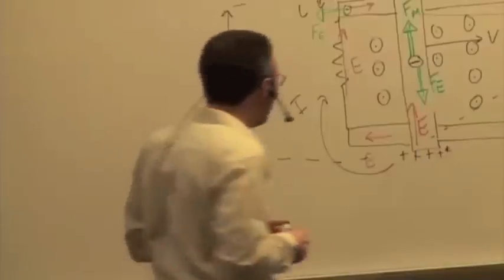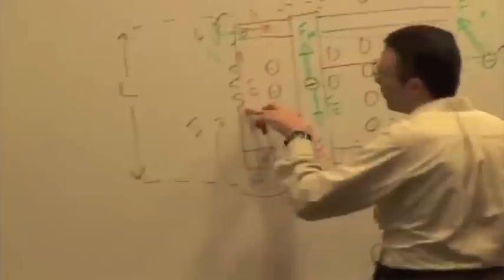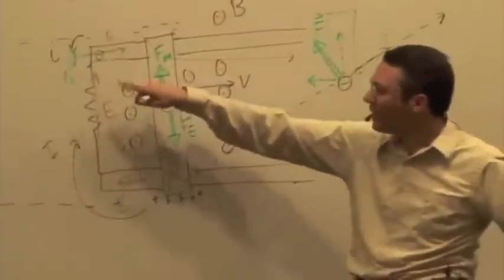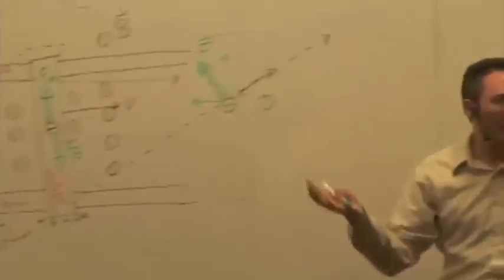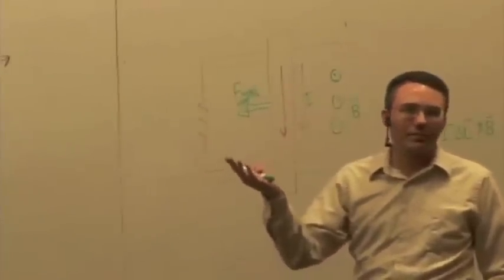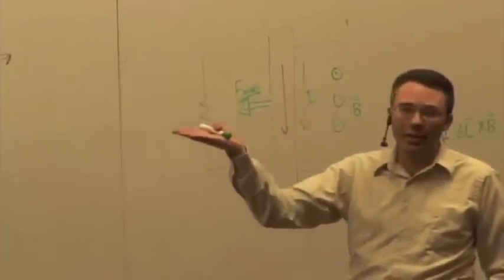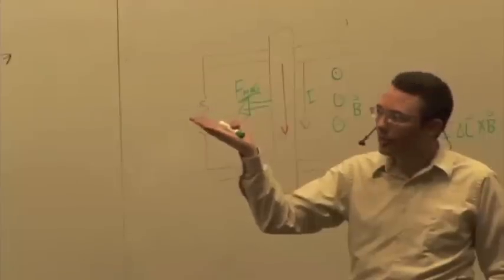Exactly, the energy is being dissipated by the resistor, right? We have energy being dissipated by the resistor, so it's got to come from somewhere. Where's it coming from? The kinetic energy of the bar, right? The kinetic energy of the bar.